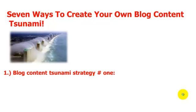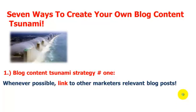Here is blog content tsunami strategy number 1. Entrepreneur, whenever possible, start linking to other marketers' relevant blog posts. I use social bookmark marketing, you should use it, but sometimes you need to share the love and link to other marketers who are relevant to you — not necessarily competing, could be non-competing — but you got to start linking to their information. This is how you get Google up.